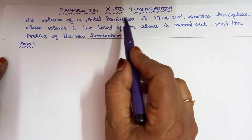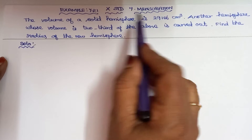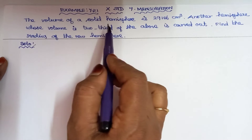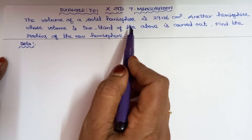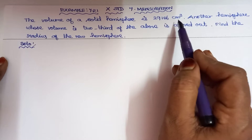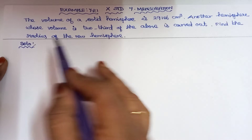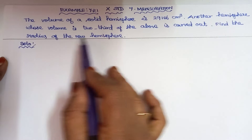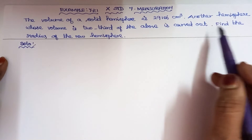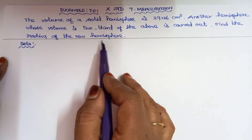Good morning everyone. Class 10 standards, chapter Mensuration, example 7.21. The volume of a solid hemisphere is 29106 centimeter cube. Another hemisphere whose volume is two-thirds of the above is carved out. Find the radius of the new hemisphere.